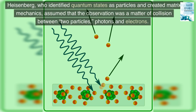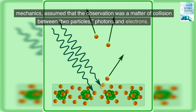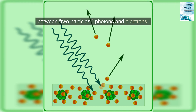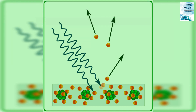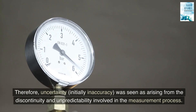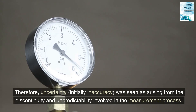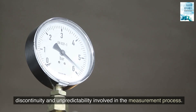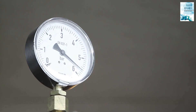Heisenberg, who identified quantum states as particles and created matrix mechanics, assumed that the observation was a matter of collision between two particles — photons and electrons. Therefore, uncertainty — initially called inaccuracy — was seen as arising from the discontinuity and unpredictability involved in the measurement process.